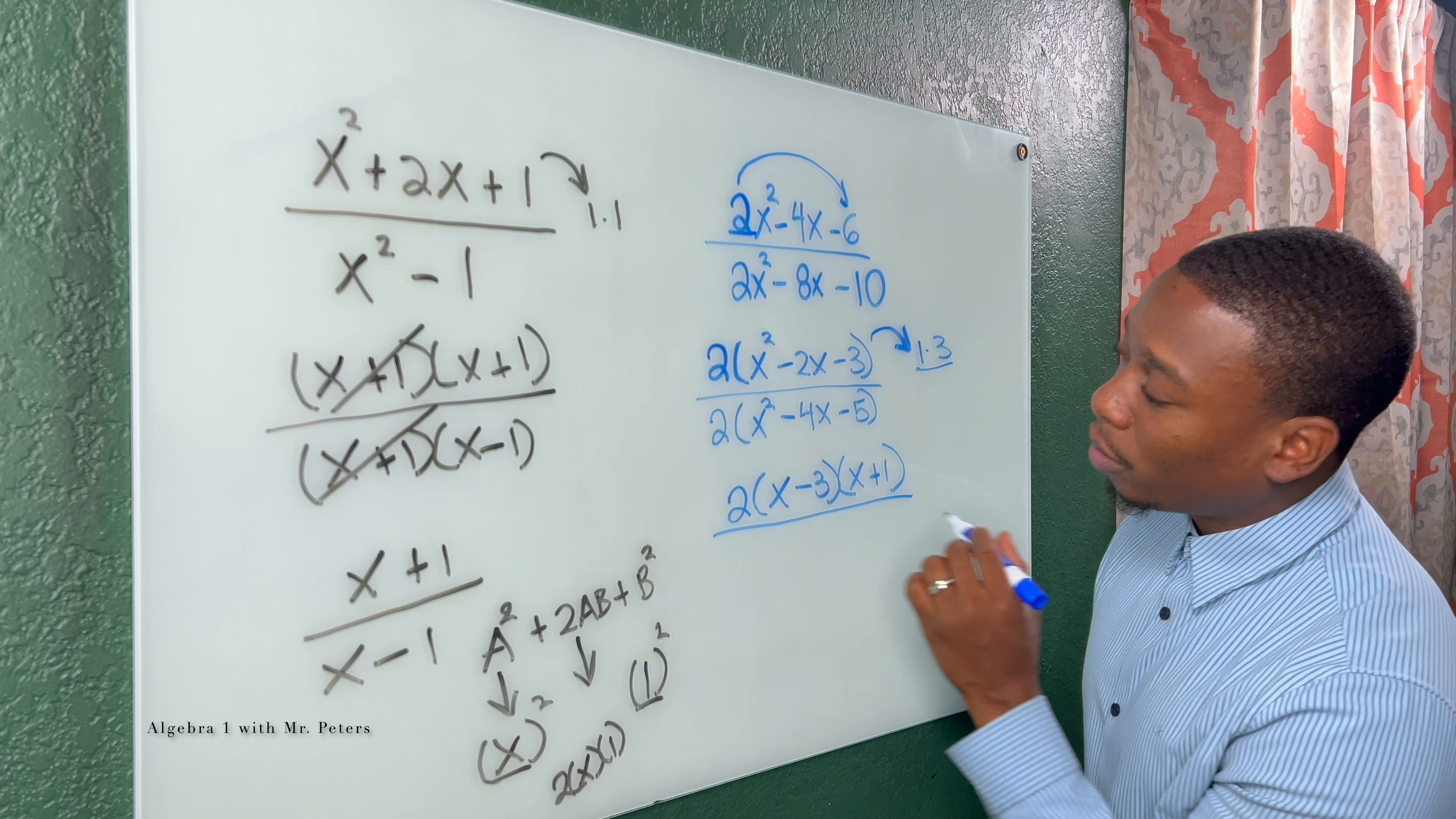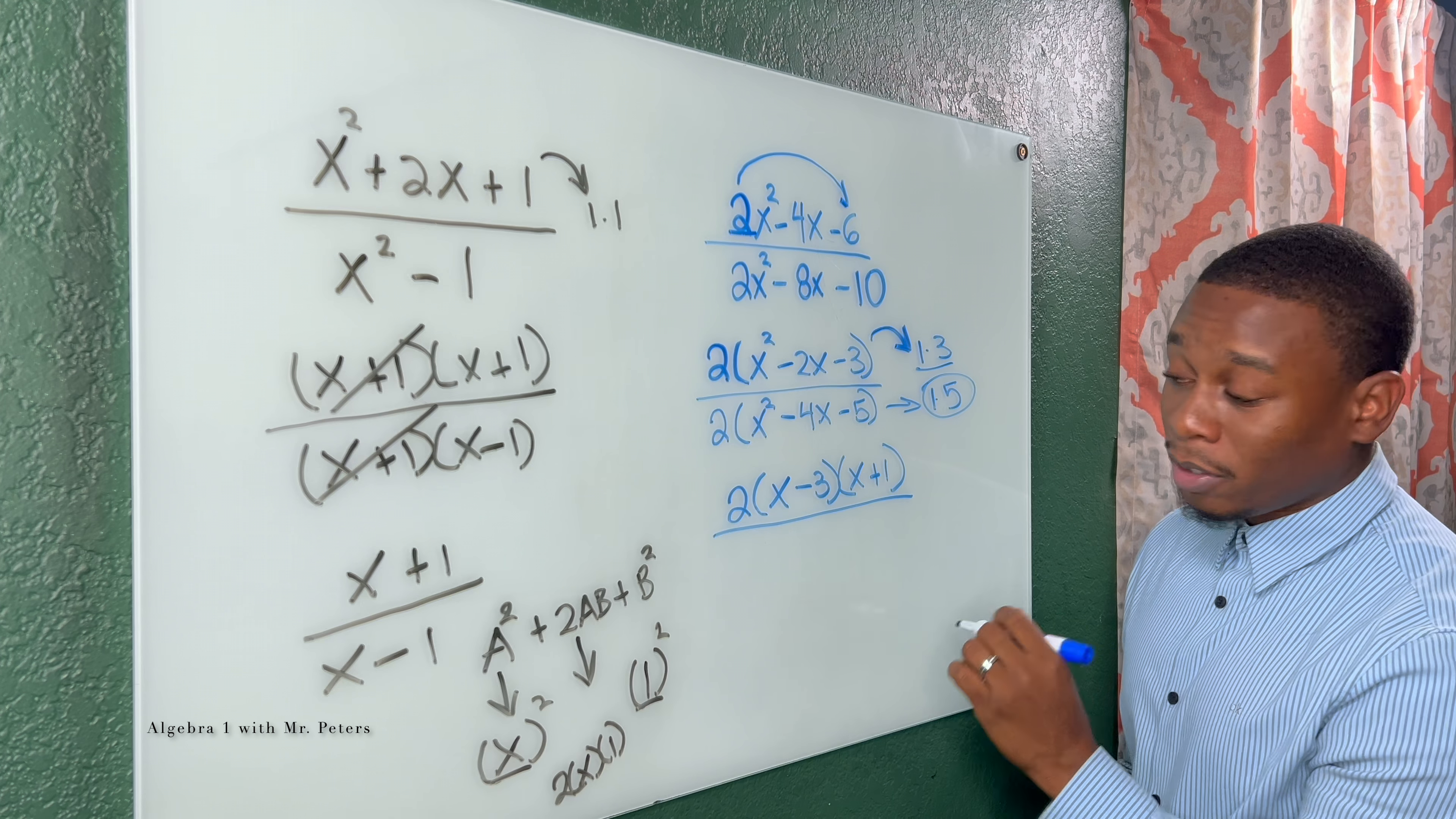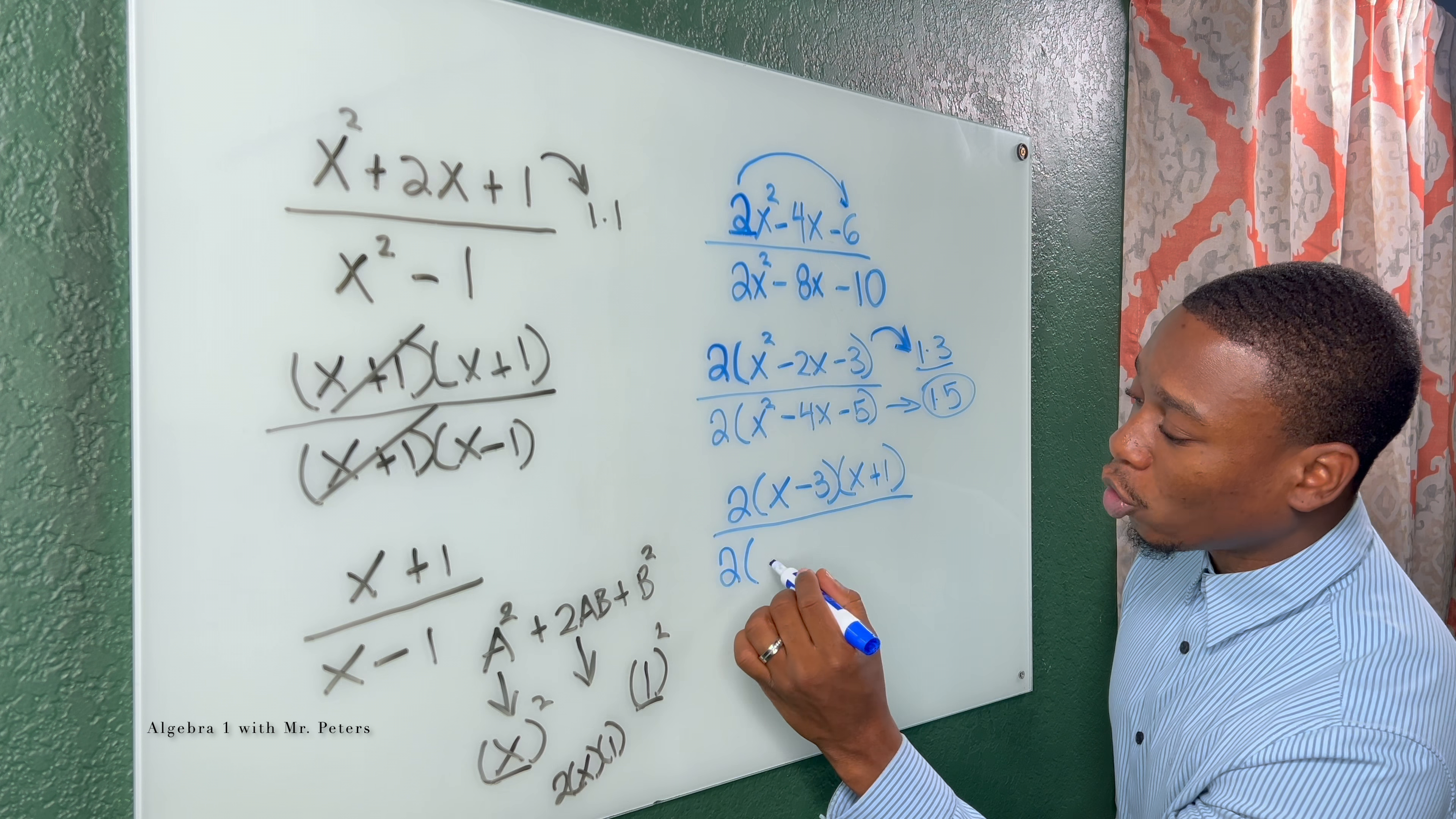That is what the numerator factors down to. Then we go down to the denominator, and the only factors are just 1 and 5.